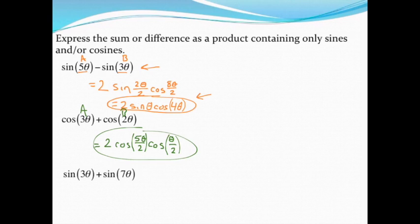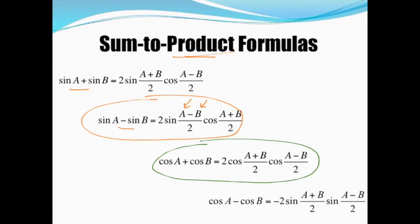We'll do one more because there is one thing that may come up with these that adds an extra step, and that's if you have a negative theta value. Let's try this one: sin(3θ) + sin(7θ). Again, looking at my formulas, the one that's got the sum of sines would be this top formula.